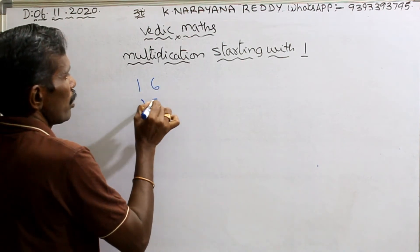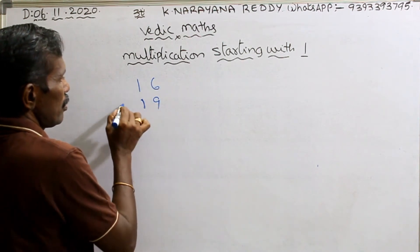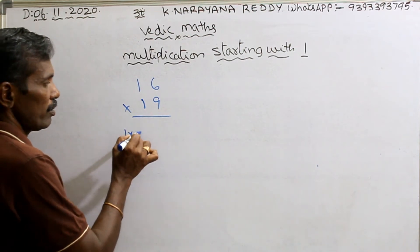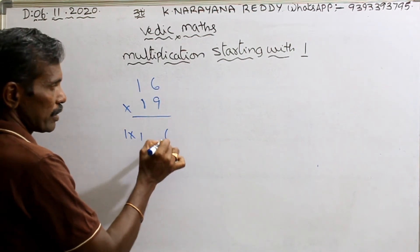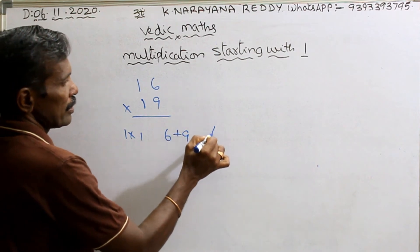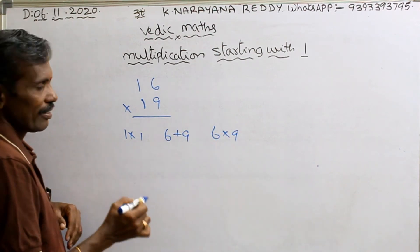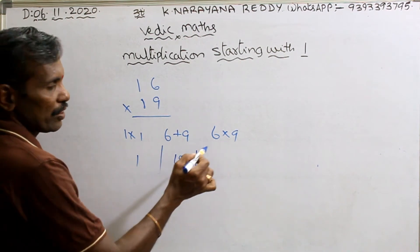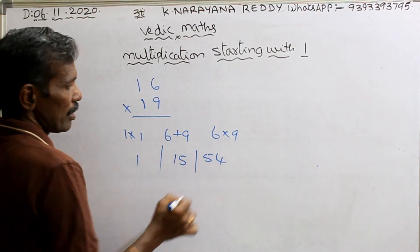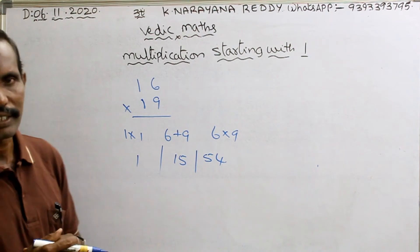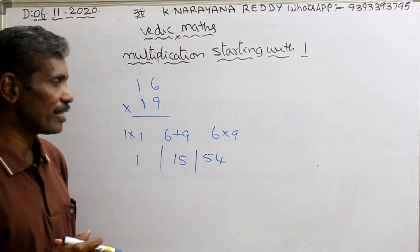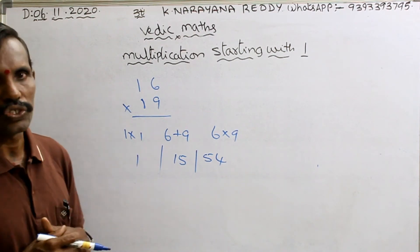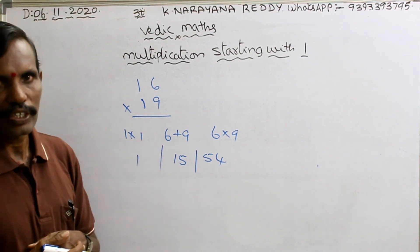Take 16 into 19. Same method: 1 into 1, then 6 plus 9, then 6 into 9. Now we can use the balancing rule. Why? Because these are numbers, not digits. Only 1 is a digit. That is why we need the balancing rule.